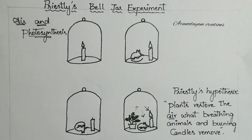For photosynthesis we need four raw materials: carbon dioxide, water, sunlight, and chlorophyll. These are the four raw materials which are required for the process of photosynthesis.